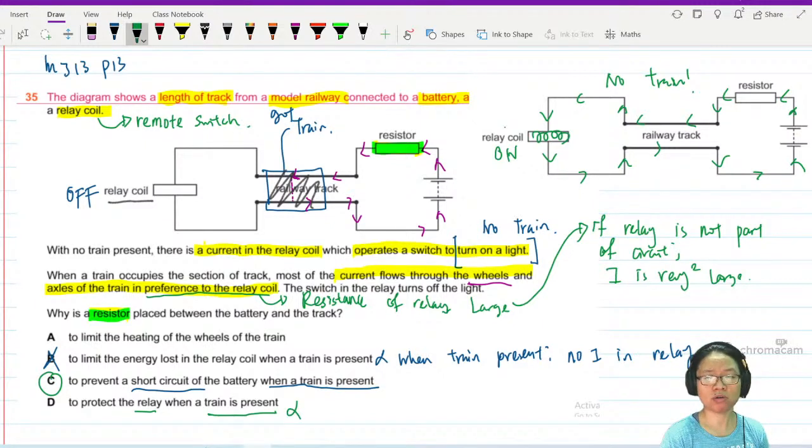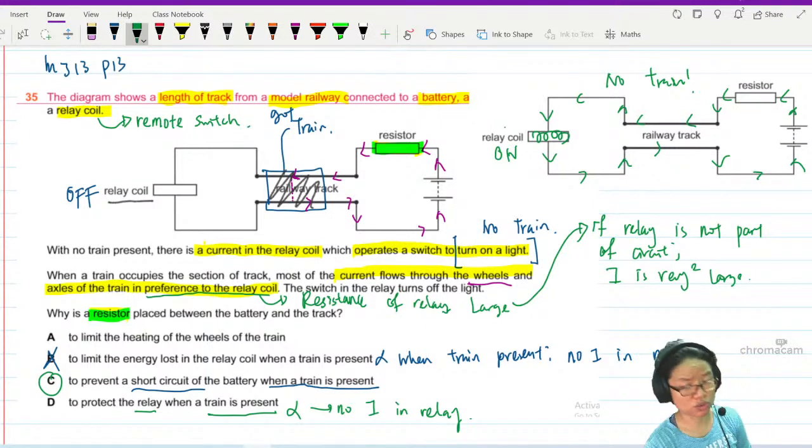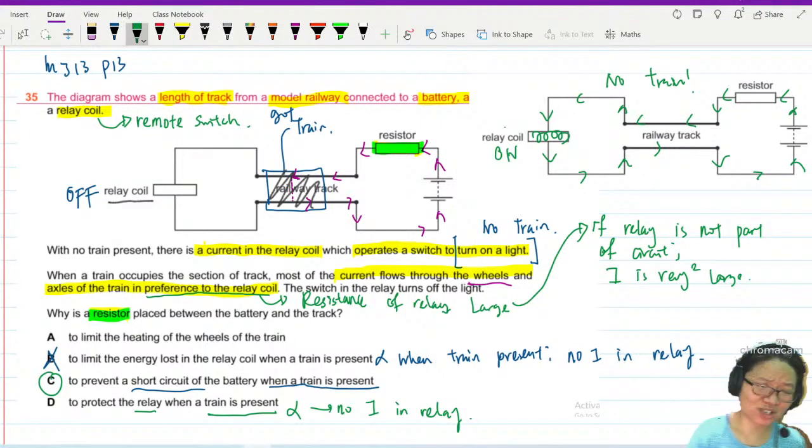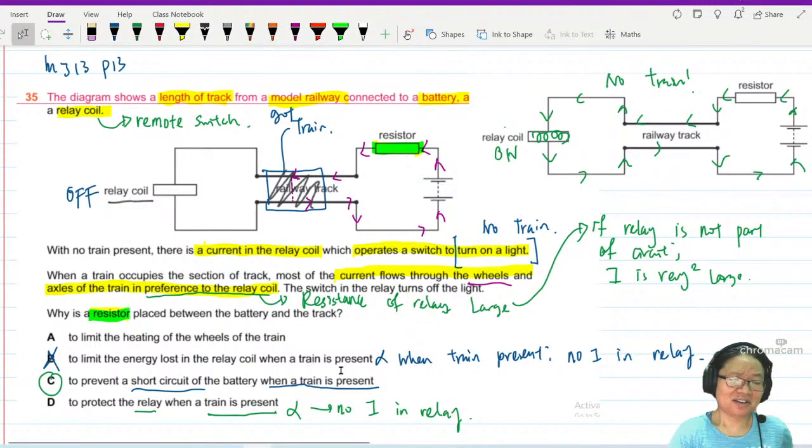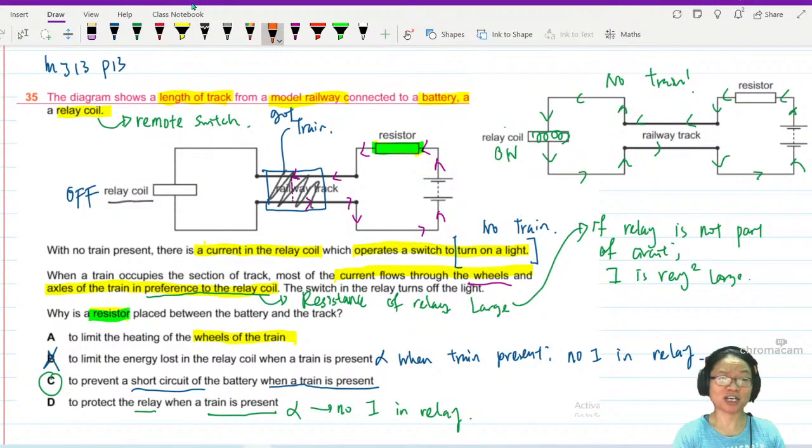So relay is like a switch that turns on and off. Limit heating of wheels of the train? I actually think that whether you put the resistor or not, the main reason why the wheels of the train gets hot is because it goes round and round.